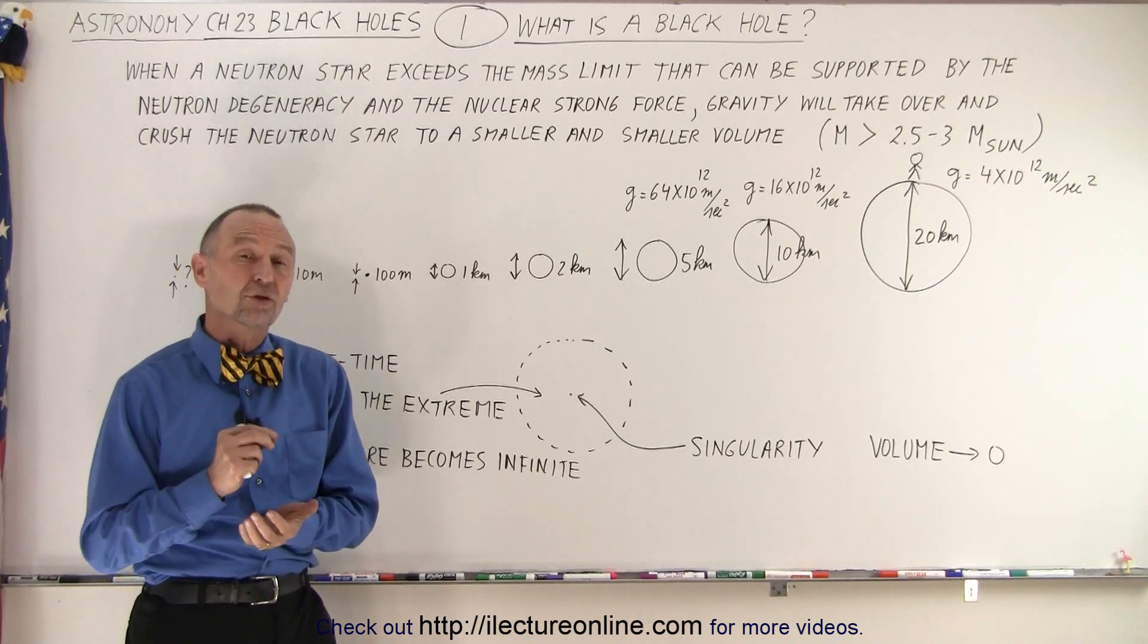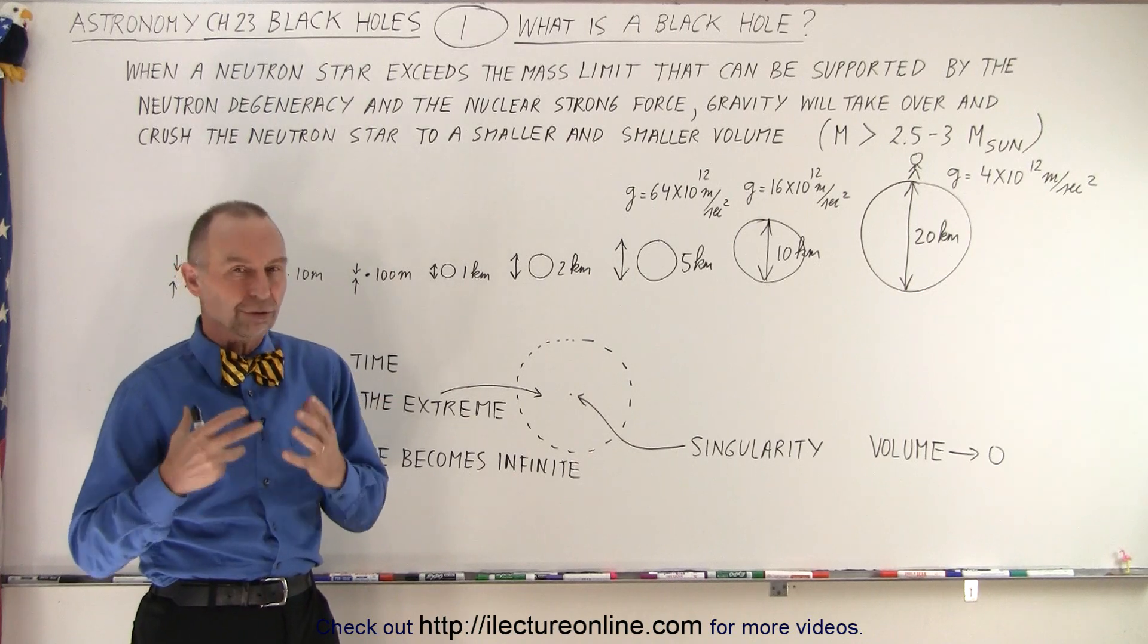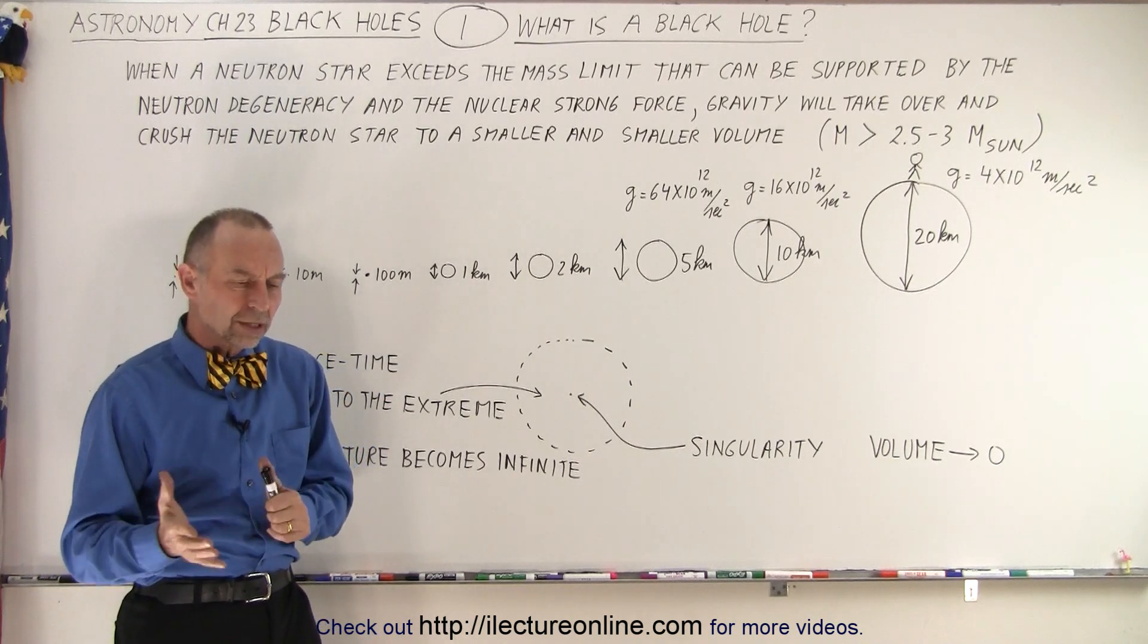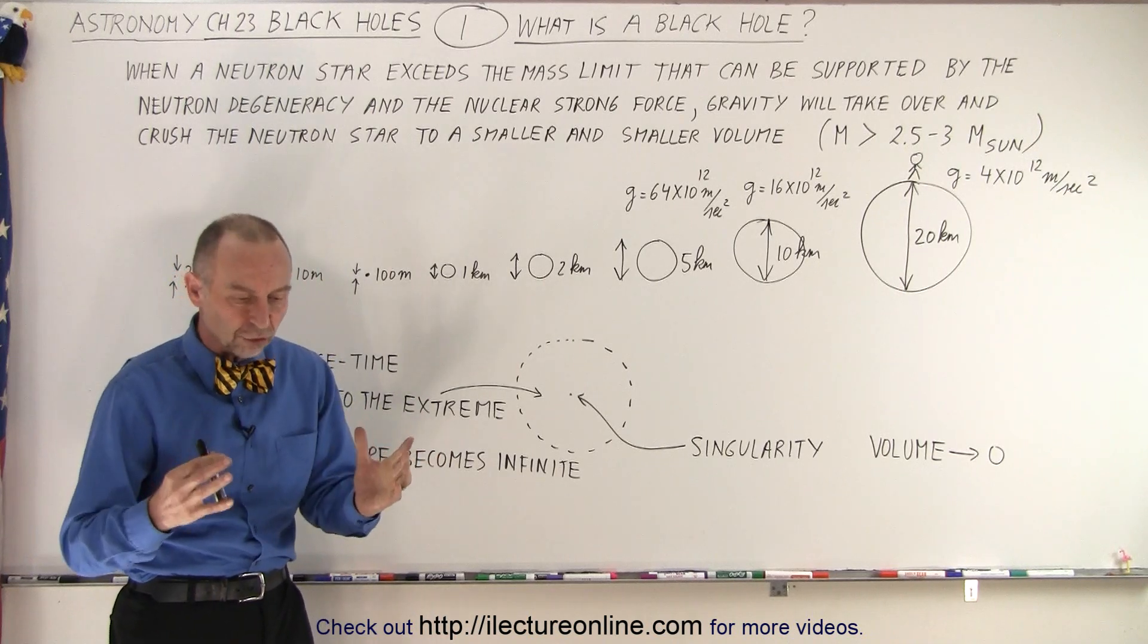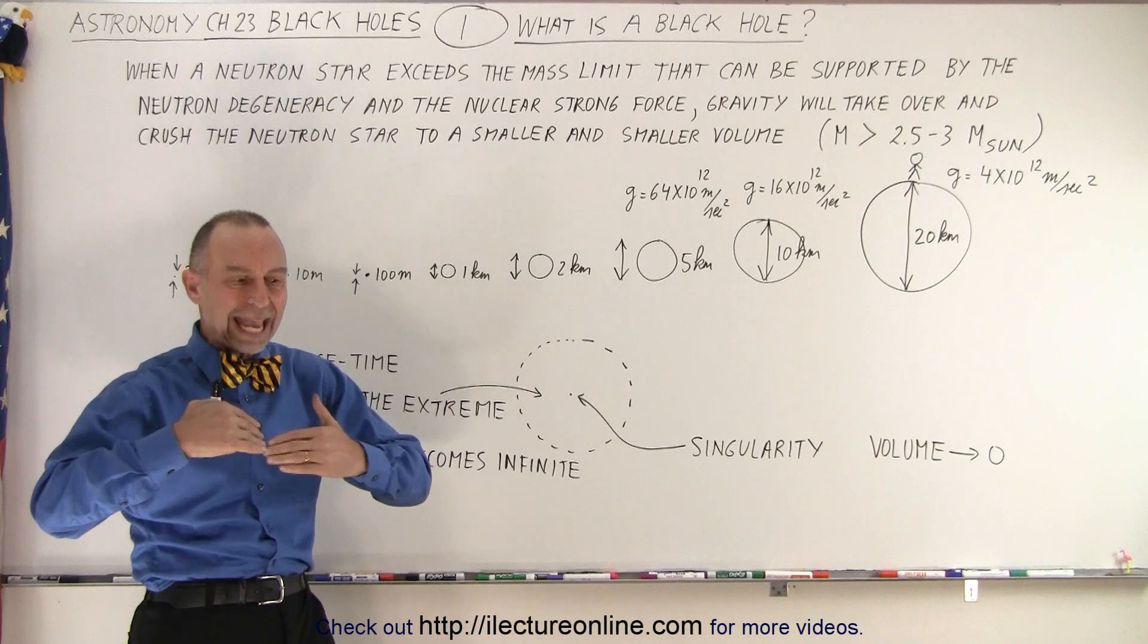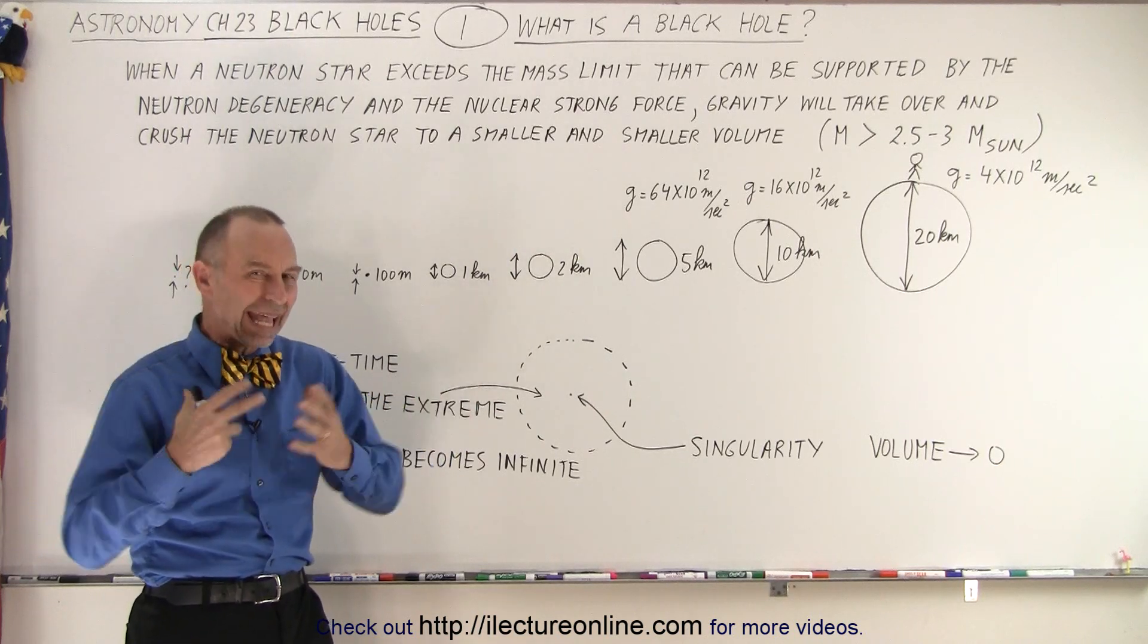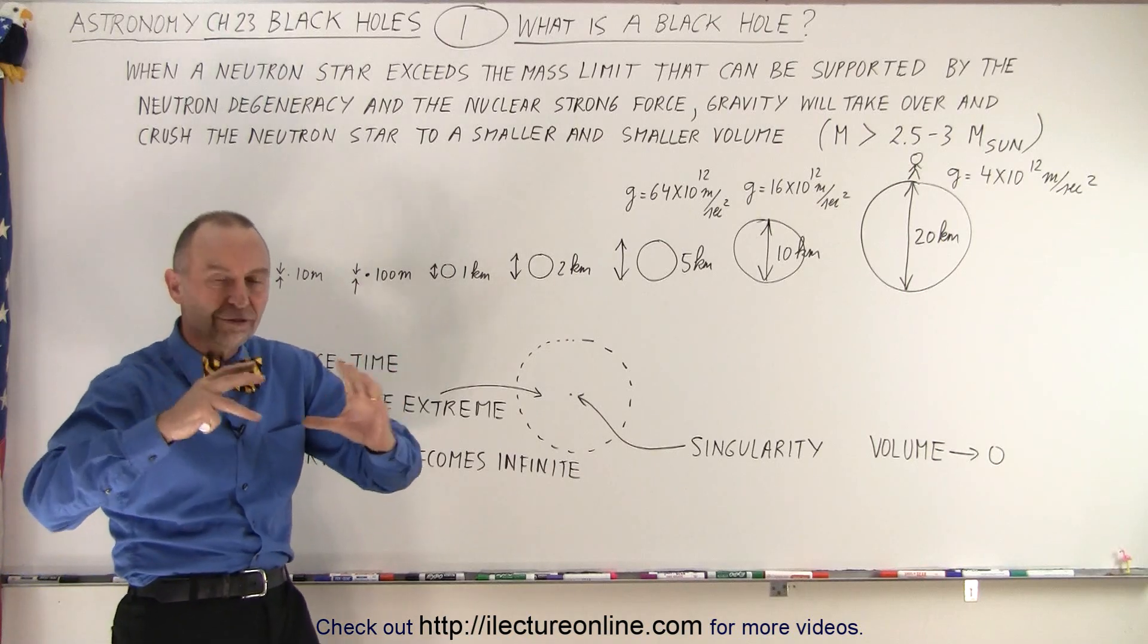But perhaps a better way to describe a black hole is in trying to describe how a black hole actually forms. So we talked in the previous series of videos about neutron stars. And neutron stars were the end result when a supermassive star went to the end of its life cycle, when the end of the red giant life cycle, and the core had filled with iron.